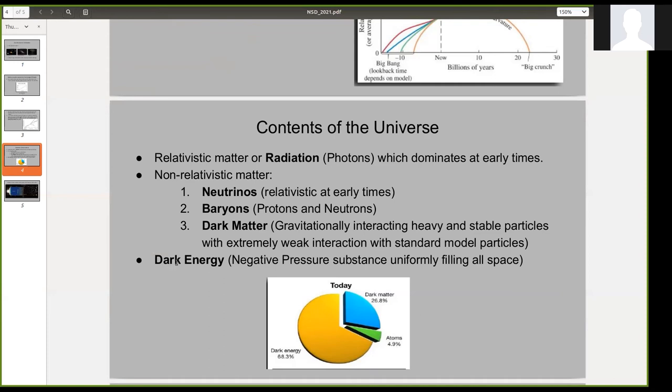And the third component is the dark energy. It's a negative pressure substance which uniformly fills all the space. It was again hypothesized to explain the accelerating nature of the universe. So which means that the universe is not only expanding, its expansion rate is getting faster with time.